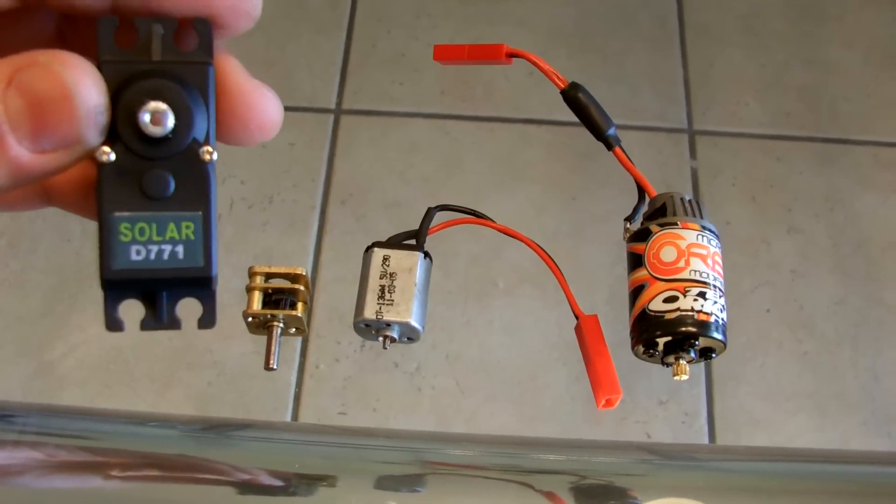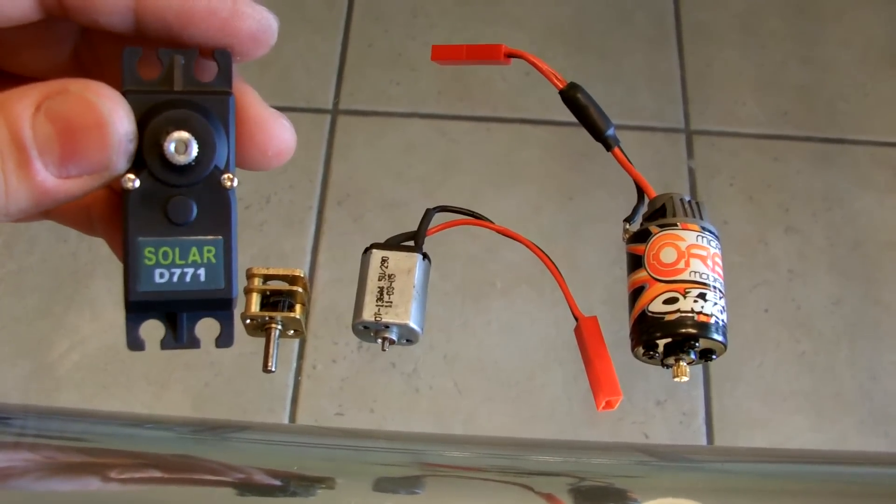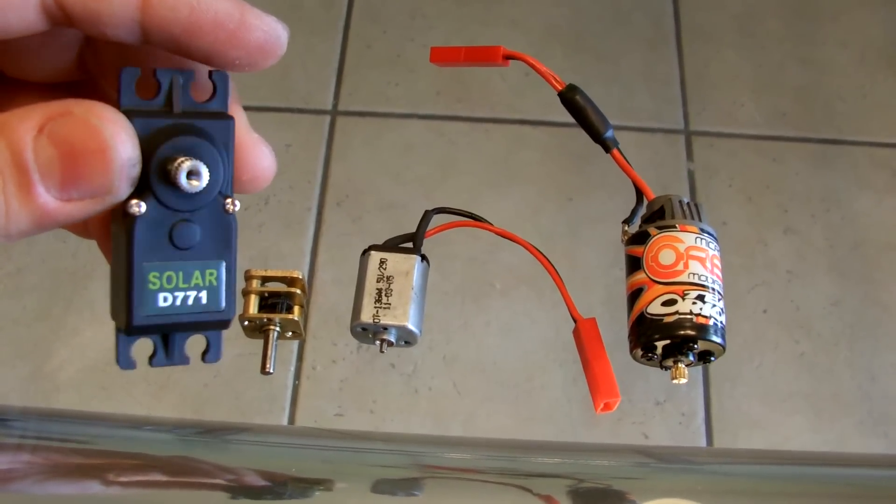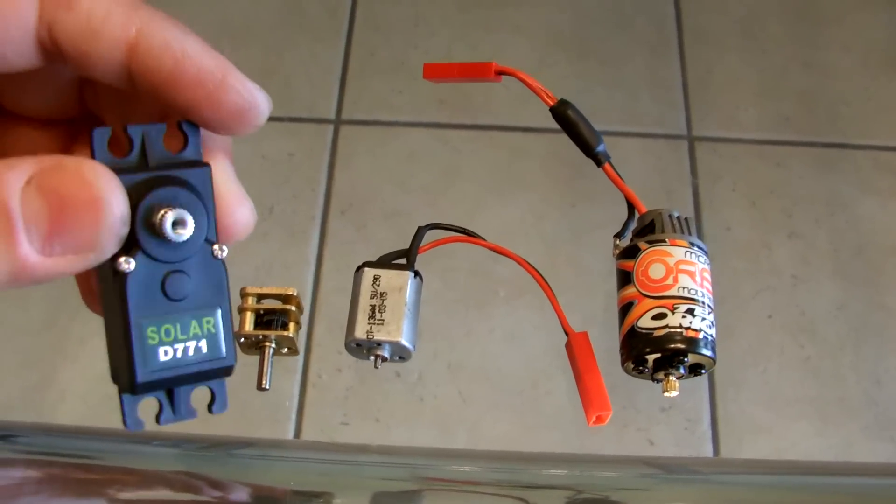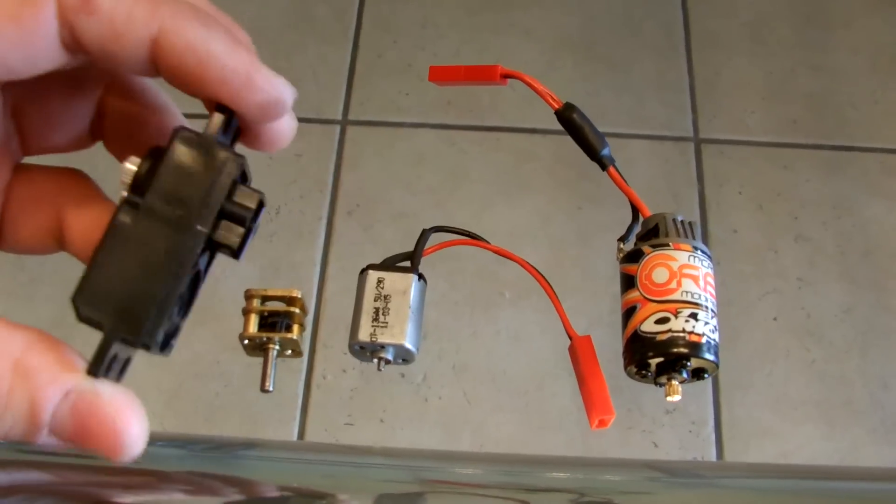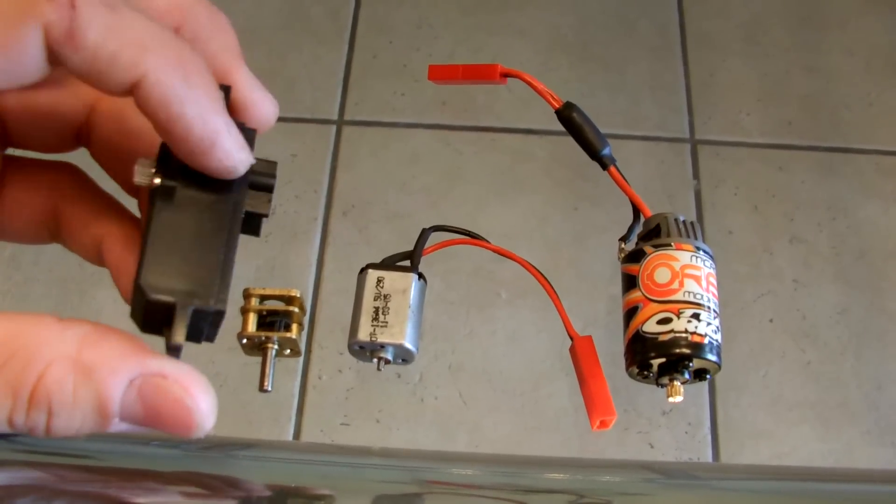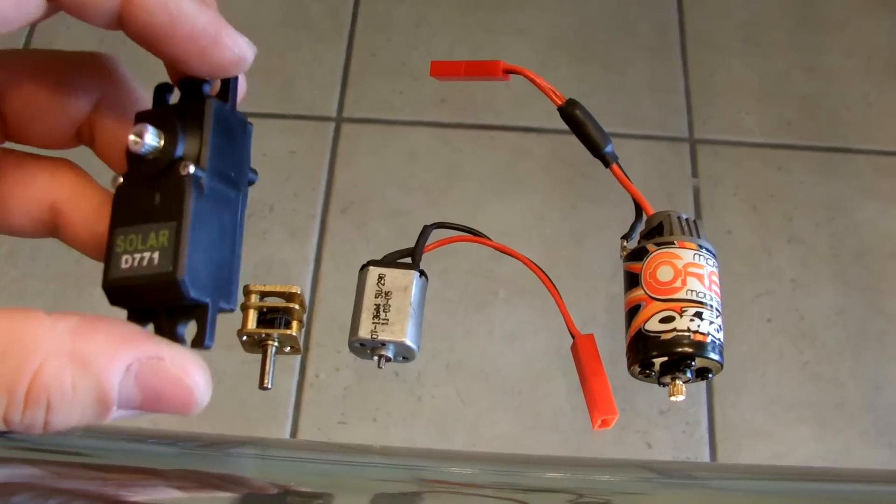As you guys already know, I've been using the cordless motor from the Solar servo, the D771. It's got a lot more power than the other motors I was using on my Sumo crawler. Now what I'm going to do is use the metal gears inside